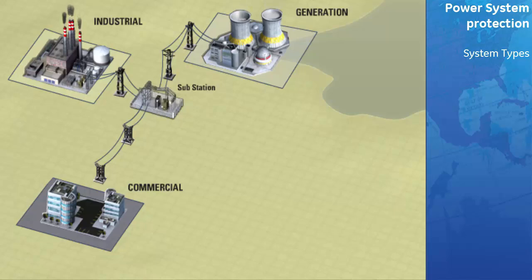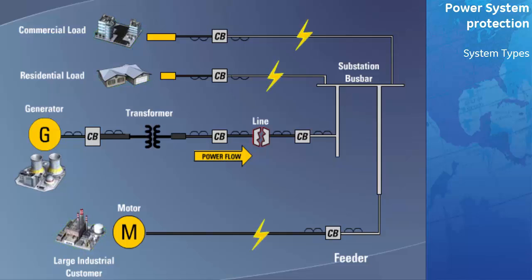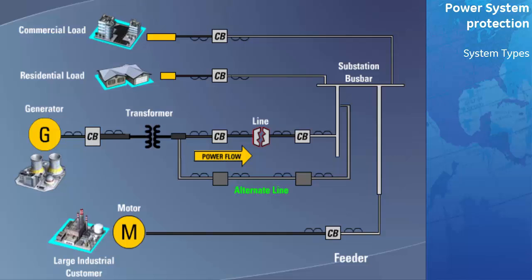The power system can be thought of as a chain, the links of which are the generators, the power transformers, the switchgear, the transmission lines, the distribution circuits, and the loads. The failure of any link destroys the capacity of the chain to do the work for which it was intended. One way in which the continuity of the chain can be preserved is to provide alternate links. The transmission lines, being exposed to the natural elements, are much more vulnerable to short circuit faults than the power transformers and switchgear.